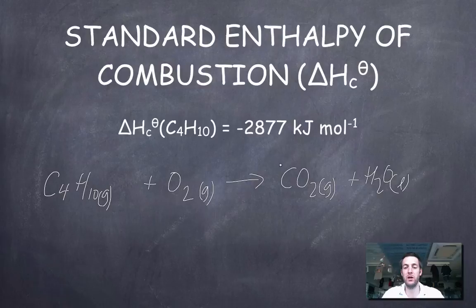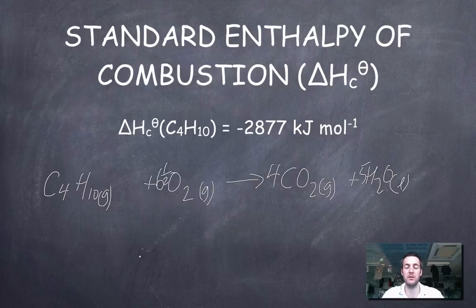Now we've got one mole of this substance burning, so we know what quantities we're going to put in our equation. We've got four carbons, so four CO2, ten hydrogens, so five H2O, now we've got 13 oxygen atoms here, so six and a half O2 over here. And again we've managed to write an equation with state symbols knowing what the standard states are for this particular piece of information.